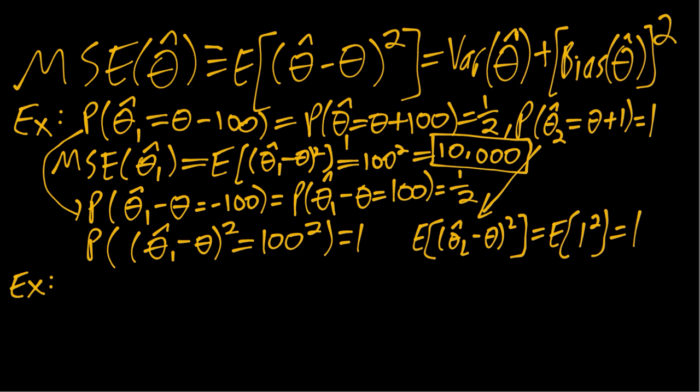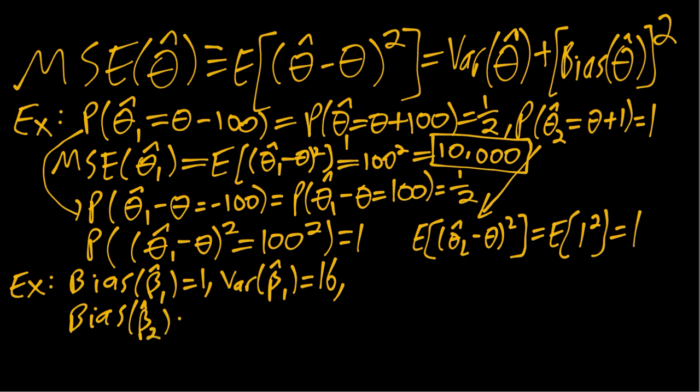And in the next example, we'll use the variance and bias. So we'll imagine we don't actually know the full sampling distribution, but we are told the bias and variance of each estimator. So in this case, our first estimator, we'll use betas this time because it's just a letter. It doesn't actually matter. Our bias is equal to one and variance is 16. And for our second estimator, the bias is 10 and the variance is 9.